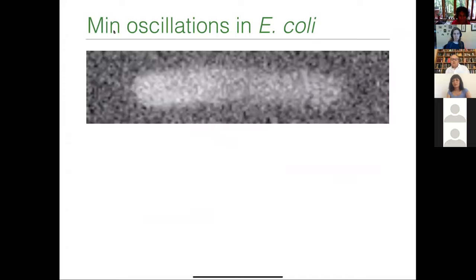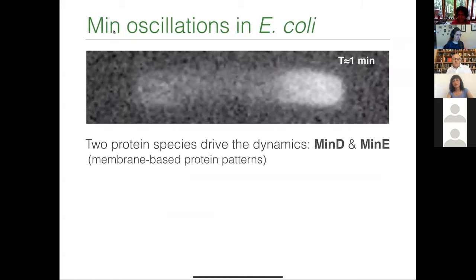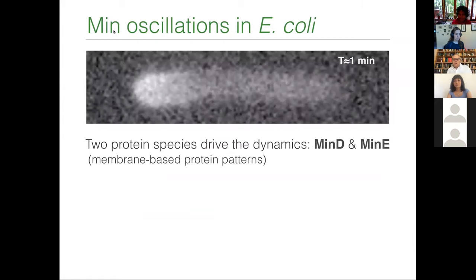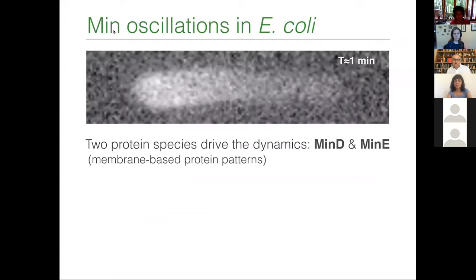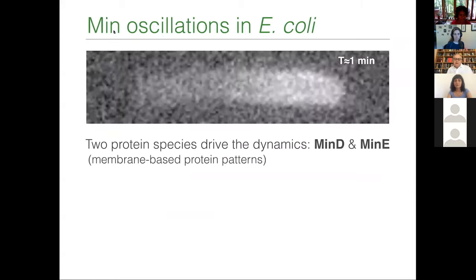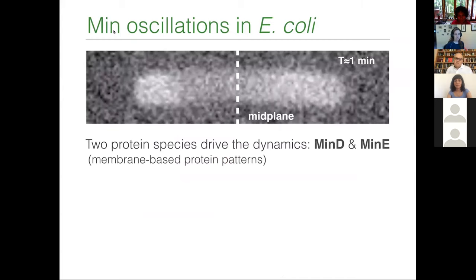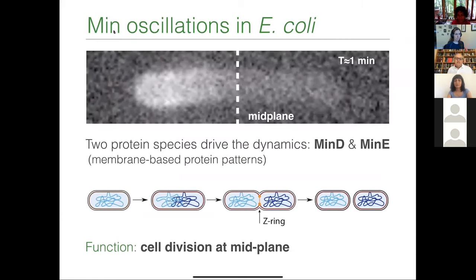This is a movie showing MIN oscillations in E. coli cells. It's an oscillation on about a minute timescale. What's fascinating about it is that it's just two proteins, namely MIN-D and MIN-E, that are responsible for that oscillation, which is a membrane-based protein pattern. It has a role: to localize the mid-plane in the cell, because there are density maxima at the poles and the minimum at the mid-plane. It's exactly there where you then have the formation of a ring of other polymers called FtsZ, responsible for cell division at mid-plane.